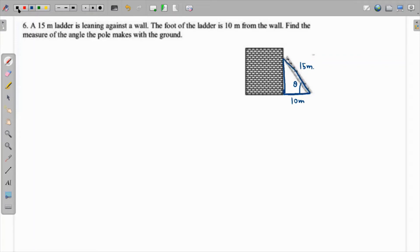And we know that adjacent and hypotenuse are known, so definitely we'll use cosine. So cosine of theta would be adjacent, which is 10, over hypotenuse, which is 15.